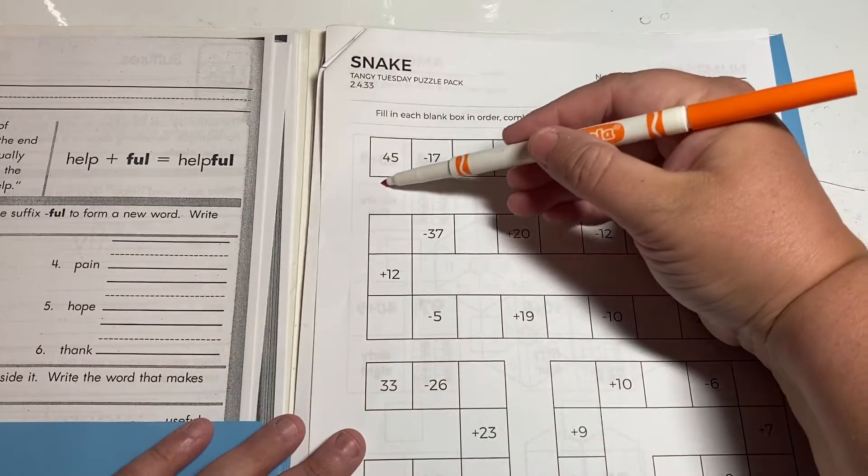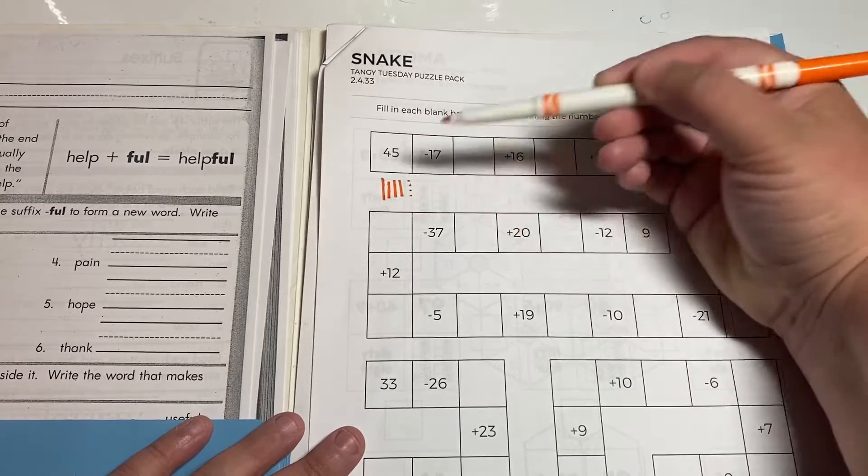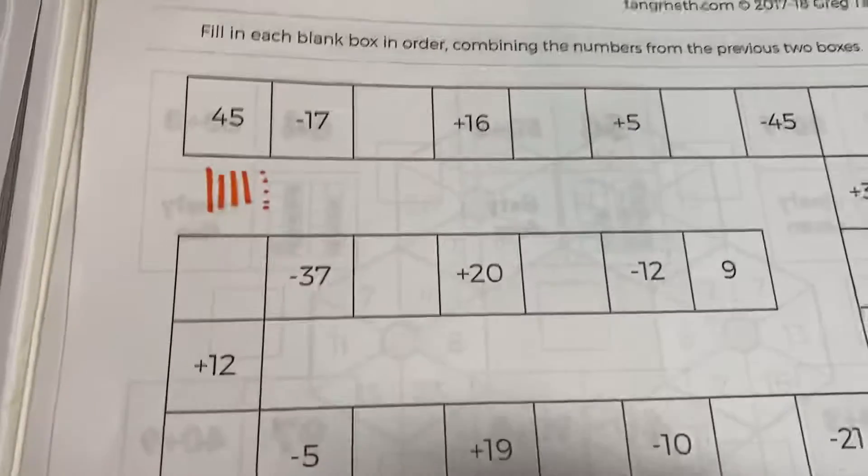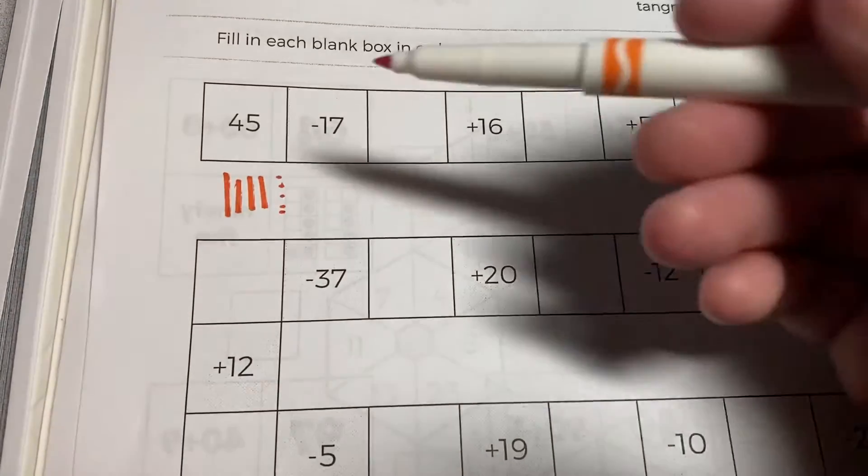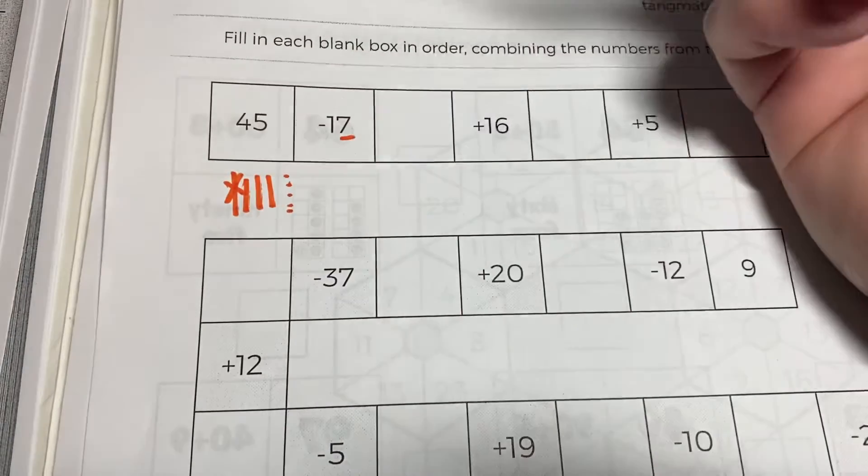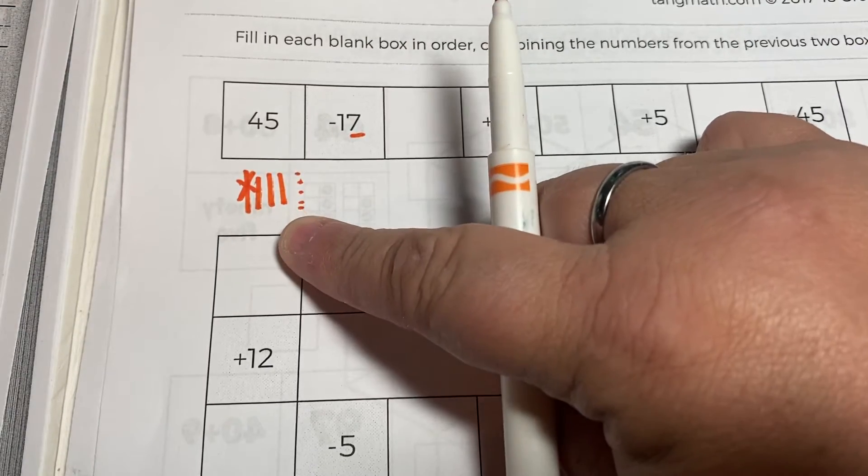I can use four tens and five ones, but because I'm doing minus 17, I need to take away one ten—that's easy—and seven ones. But I don't have seven ones here.